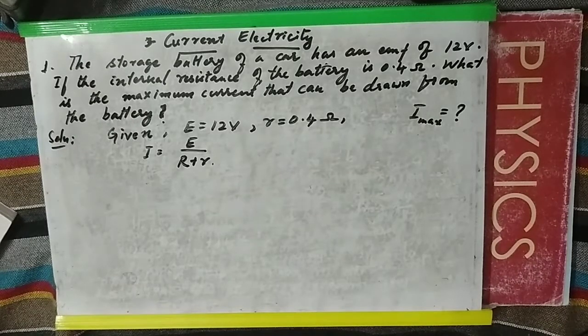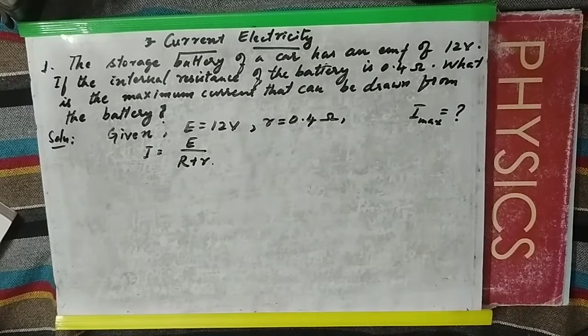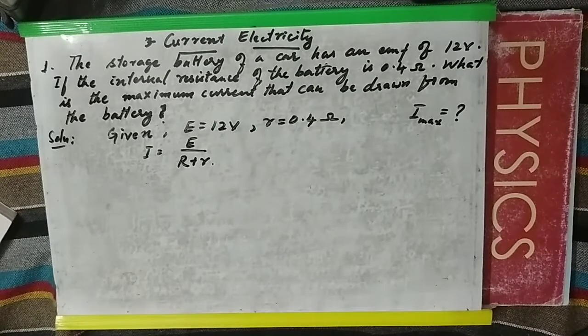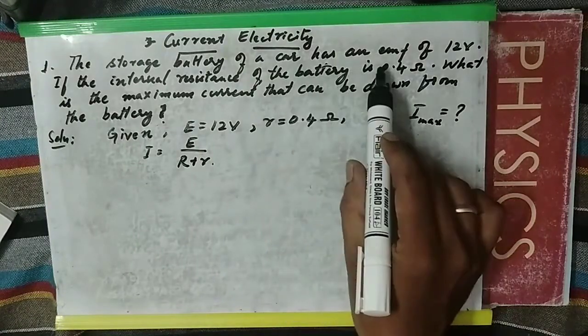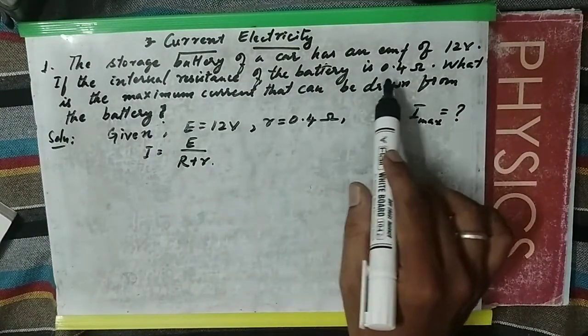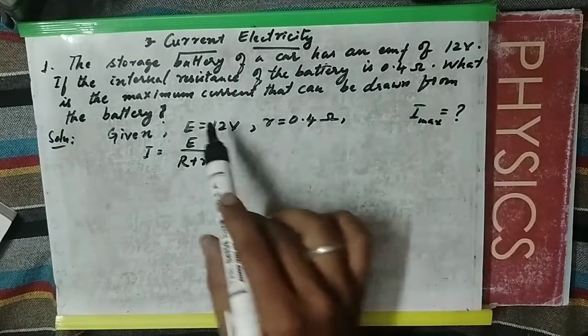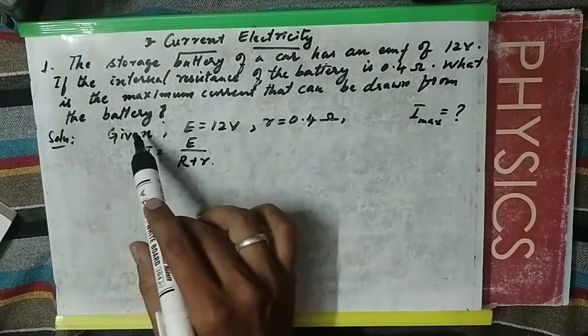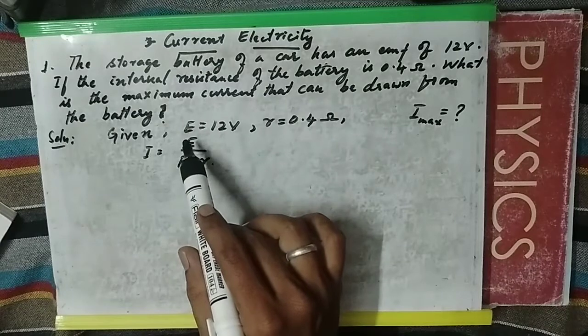Hello students, today we are going to see the chapter on current electricity. We are going to start with this problem: The storage battery of a car has an EMF of 12 volts. If the internal resistance of the battery is 0.4 ohms, what is the maximum current that can be drawn from the battery?